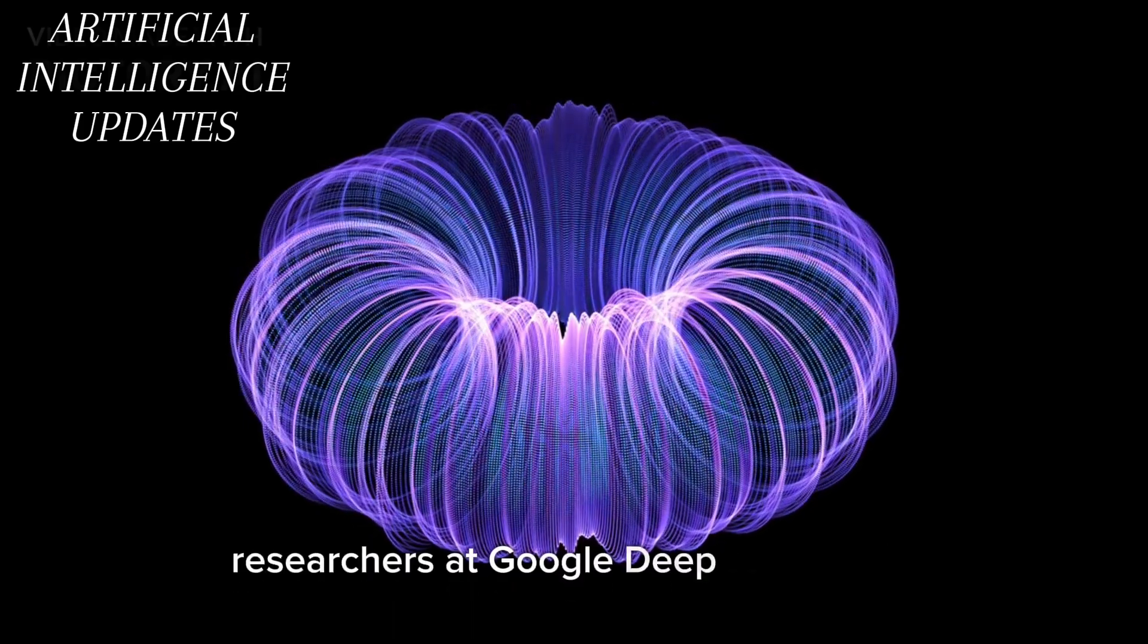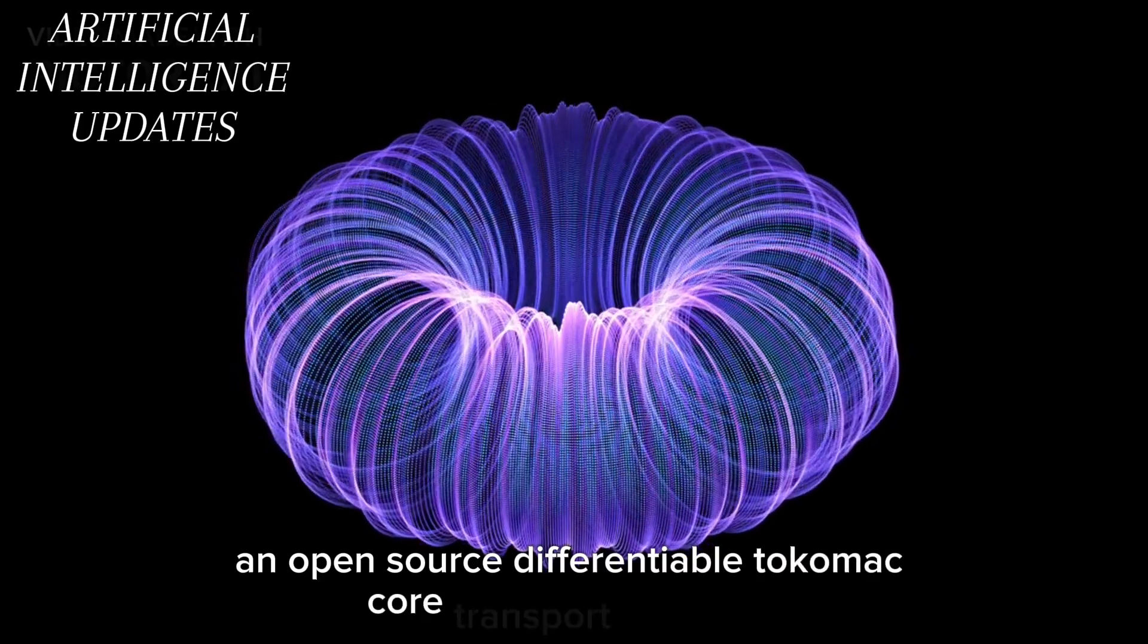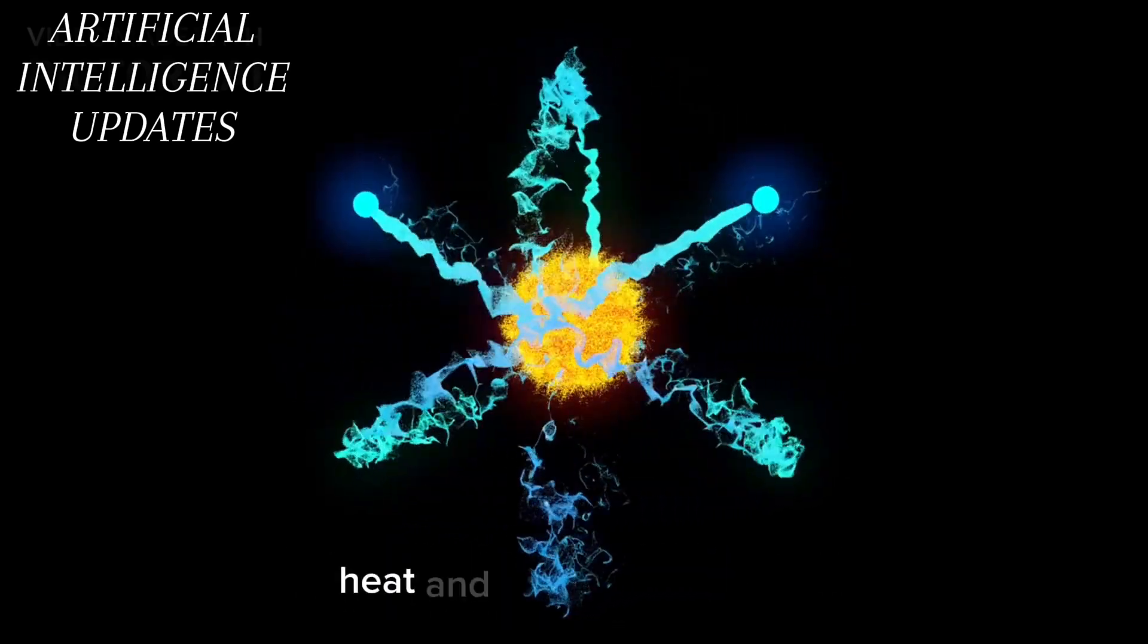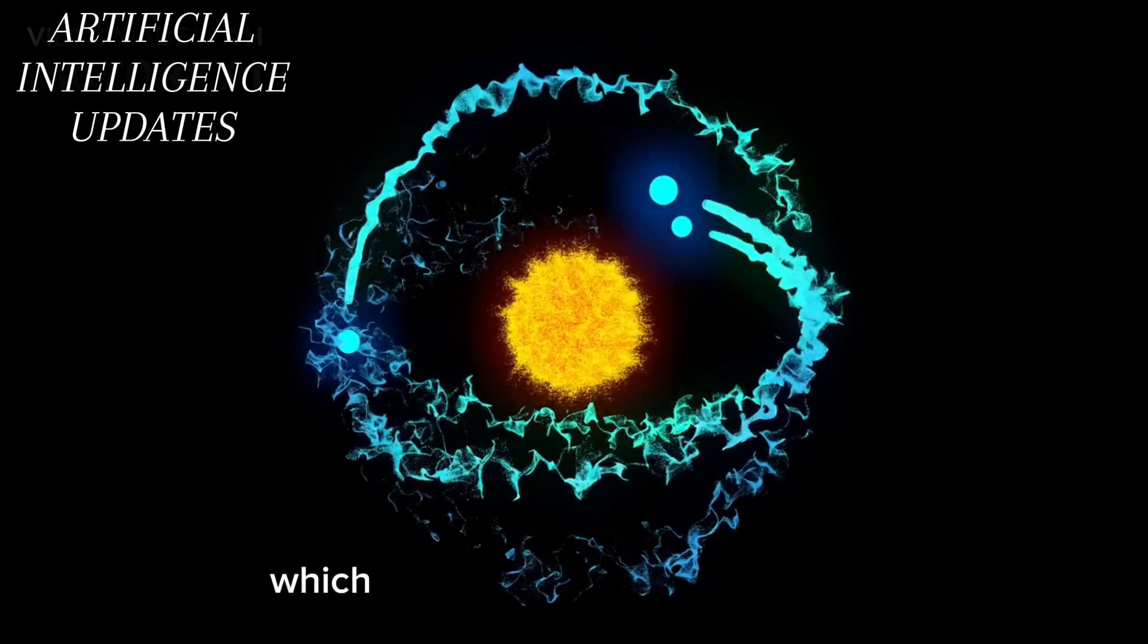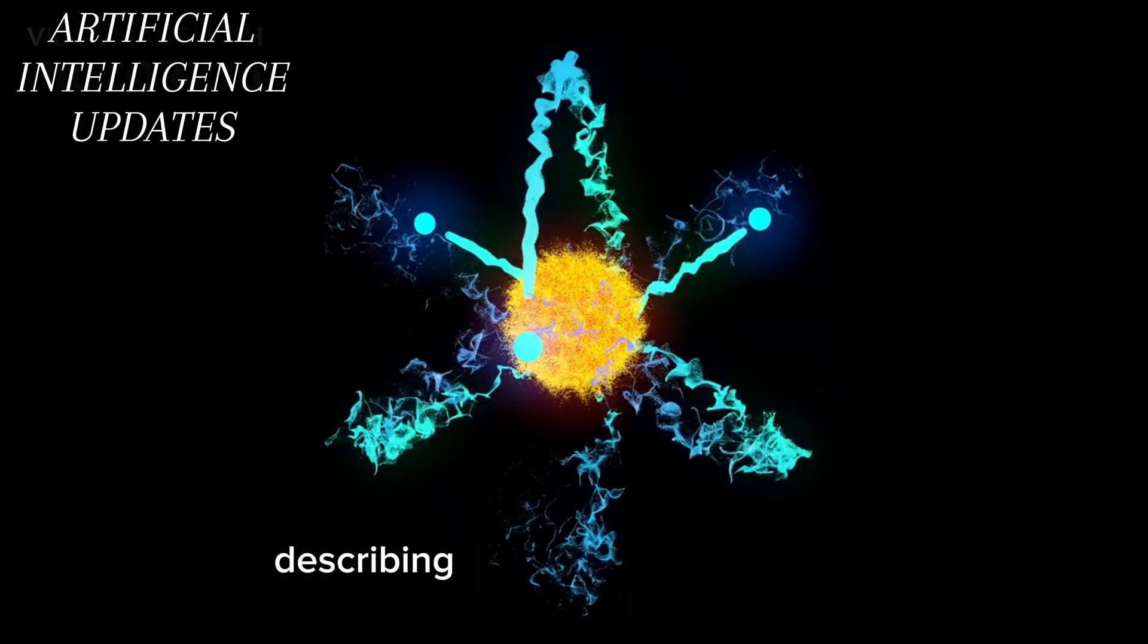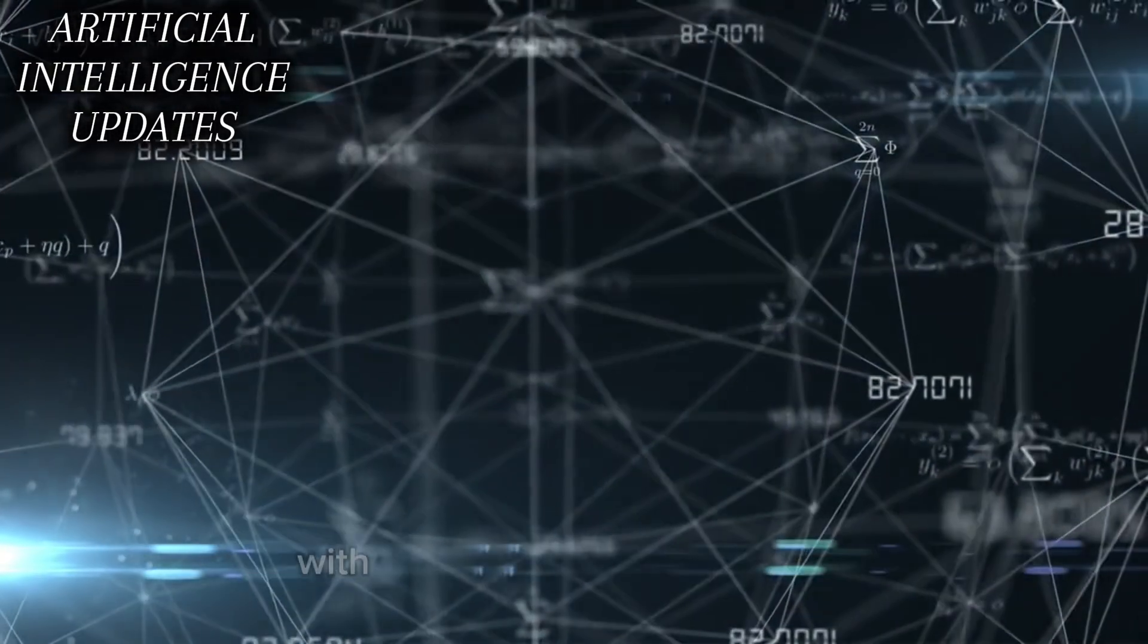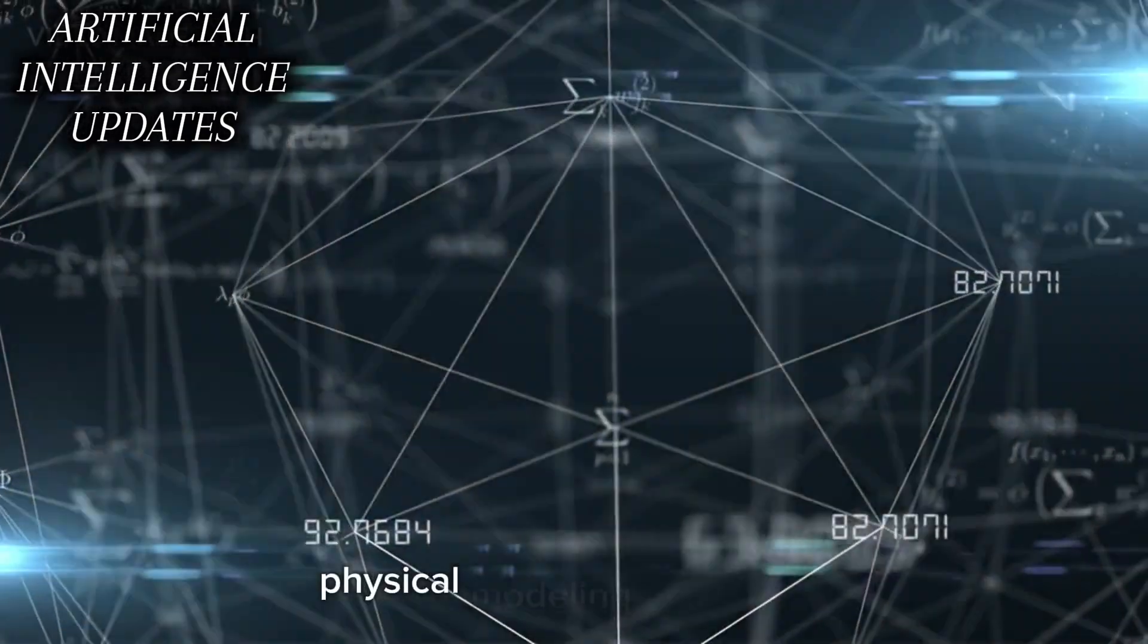Toroidal is an open-source differentiable tokamak core transport simulator implemented using advanced machine learning frameworks like JAX. Toroidal can simulate the flow of particles, heat, and electrical currents inside the core of an experimental nuclear fusion reactor, which is an extraordinarily complex coupled system of nonlinear differential equations describing magnetohydrodynamic plasma physics. Like the virtual rat brain work, a key innovation in toroidal is its tight integration with powerful machine learning techniques to solve these kinds of incredibly high-dimensional physical modeling challenges.